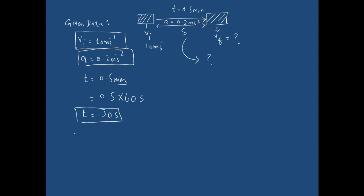Now time is 30 seconds, acceleration is this, and initial velocity is this. What we have to find? We have to find the final velocity of car, that is vf, and distance traveled by car, s.